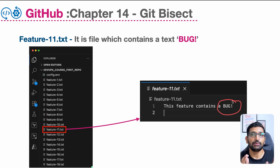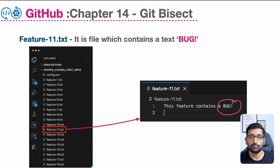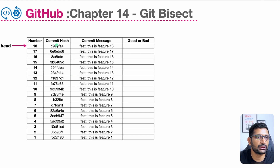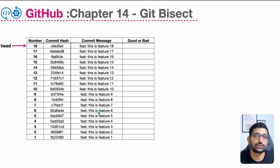With the help of git bisect we are trying to locate this particular bug inside my commit history. To simplify the understanding of git bisect I have created a table where I have copied all the hash codes of my 18 commits and all the commit messages belonging to those feature text files.